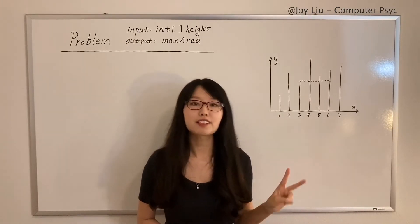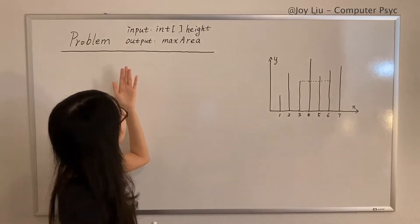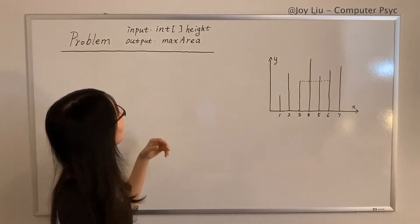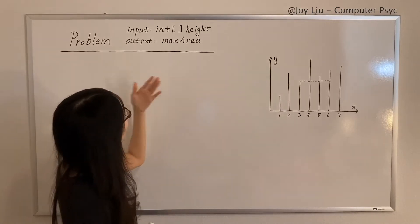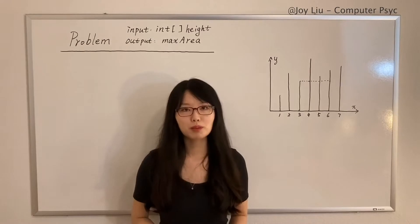It's asking us to find two lines so that the container contains the most water. The input we have is an array of heights, and the output we're going to give is the max area.